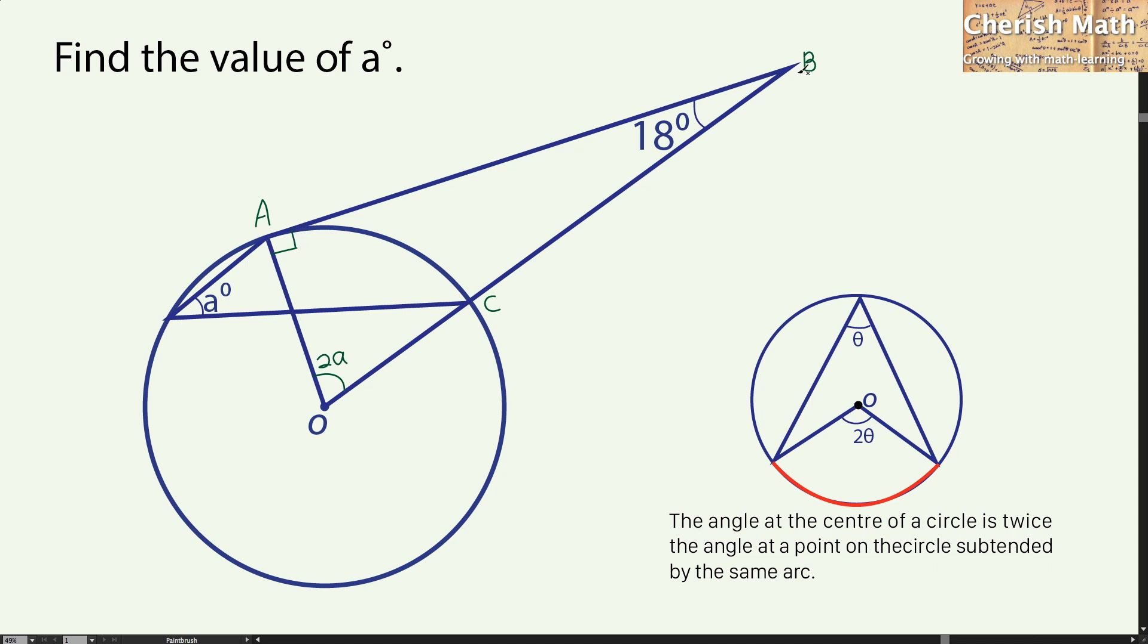I use supplementary angles to solve the problem. 2a plus 90 degrees plus 18 degrees is going to give 180 degrees. It is obtained by referring to the triangle OAB.